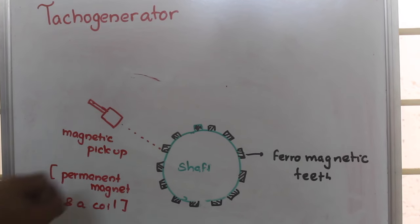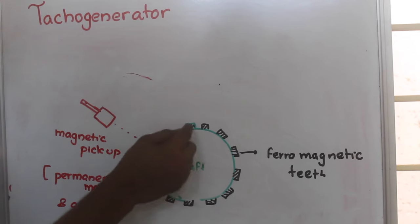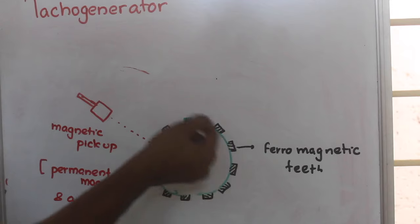The peculiarity is that on the surface of the shaft there will be some ferromagnetic teeth. These teeth will be attached to a part of the shaft.